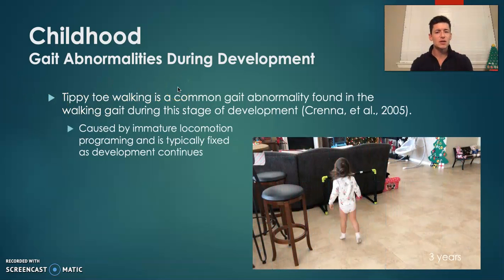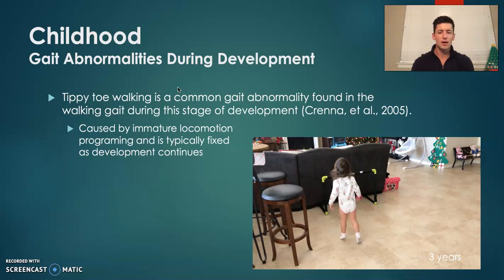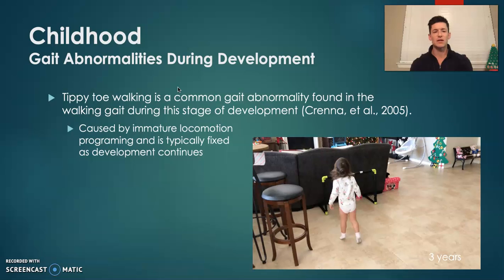Common gait abnormalities during the childhood stage of development include a lot of tippy-toe walkers. This is typically caused by immature locomotion programming and is typically fixed over time as experience is gained. If it does persist, interventions of teaching the proper gait sequence are typically prescribed.